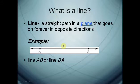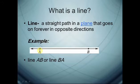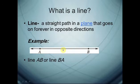What is the line? The line is a straight path in a plane that goes on forever in opposite directions. It has no start or end point. For example, line AB, and we can also read it line BA. Because the line has no end points, we can't measure its length either. The line segment and the ray are both parts of a line.